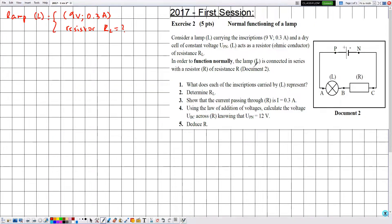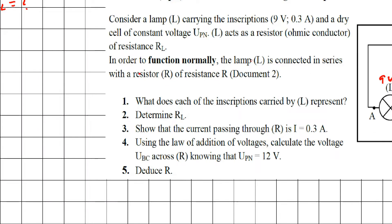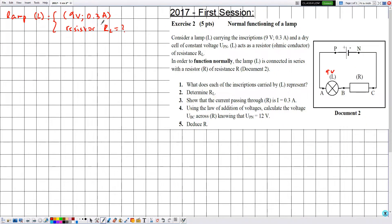Since the lamp L is functioning normally, the applied voltage is equal to the rated voltage, which is 9 volts. The trick in solving such exercises is to write the rated voltage and the rated current on the electric circuit itself. The lamp L also carries the rated current indication; since it's functioning normally, the traversing current equals the rated current, which is 0.3 amperes.